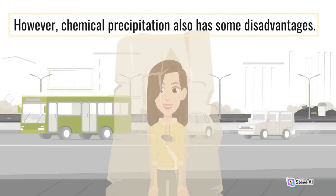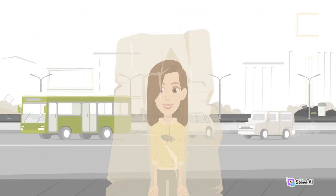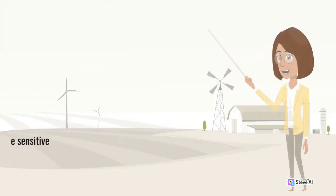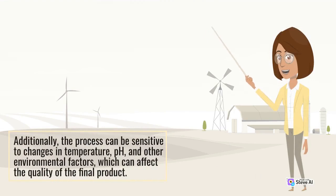However, chemical precipitation also has some disadvantages. The process can generate large amounts of waste, including the precipitate and the reagents used to cause the precipitation. Additionally, the process can be sensitive to changes in temperature, pH, and other environmental factors, which can affect the quality of the final product.